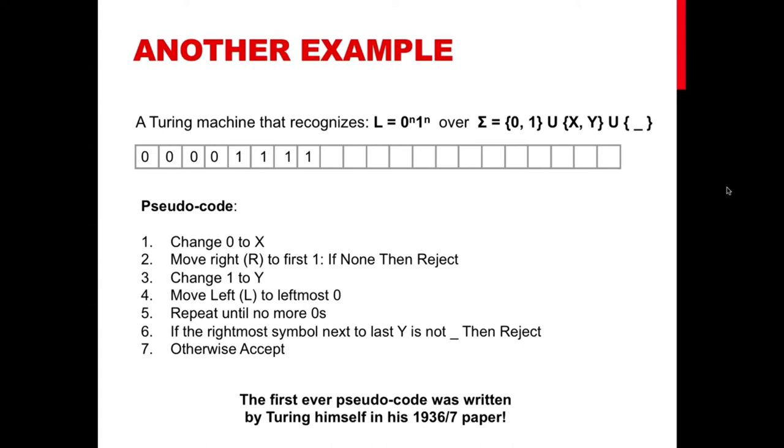Now the strategy to accept this kind of words can be described in what it is called in modern computer science as a pseudocode. That is a code in mostly natural language that can be translated to any other specific computer language. The first pseudocode was actually written by Turing himself in his original Turing machine paper in 1936.